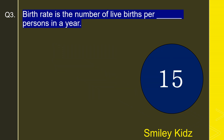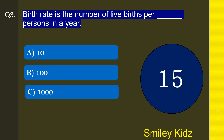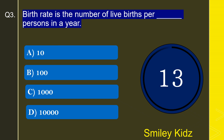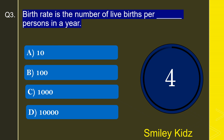Moving to question number 3: Birth rate is the number of live births per how many persons in a year? Options are 10, 100, 1000, or 10,000. The correct answer is 1000. Birth rate is the number of live births per 1000 persons in a year.